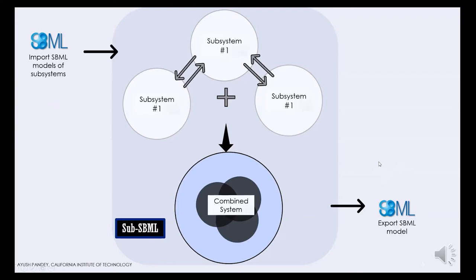To understand exactly the features of sub-SBML, let's populate the same picture with some common kinds of models we see in biology. Those three subsystems are SBML model number one, two, and three, and all of those could have some species that are a common resource. For example, you want to have a system where ATP is shared between all of these subsystems. This is something that can be easily achieved with sub-SBML by specifying that your resource ATP is shared.